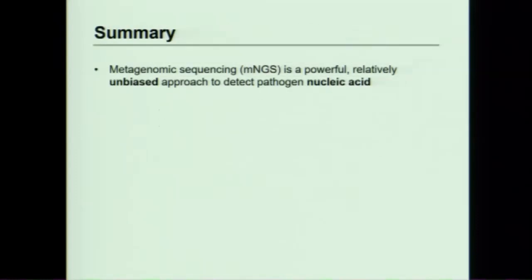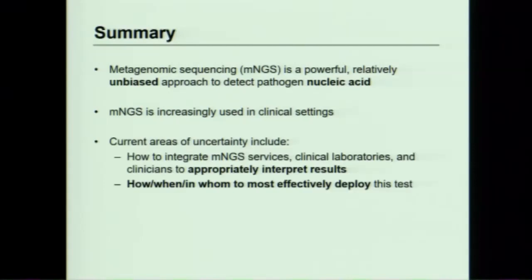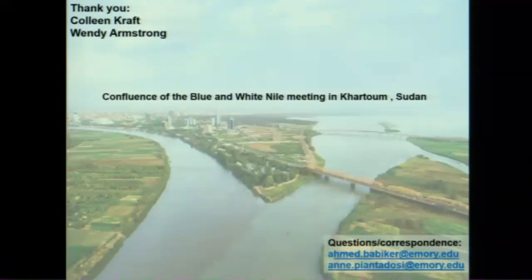To summarize metagenomic sequencing: it's a powerful, relatively unbiased approach to detect pathogen nucleic acid — and remember, nucleic acid only. It's increasingly being used in clinical settings, but there are significant areas of uncertainty, including how to integrate metagenomic sequencing services, clinical laboratories, and clinicians to not only pick who to send the test in, but to appropriately interpret the results. There's a lot of uncertainty in terms of how, when, and in whom to most effectively deploy the test. We'd both like to thank Colleen Kraft and Wendy Armstrong for the invitation.